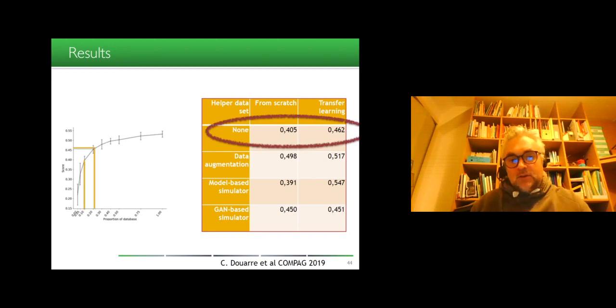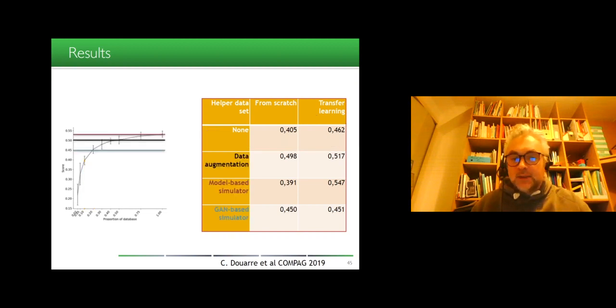So first, we see that transfer learning by training on ImageNet, of course, help already a bit and constitutes a gain of 10% of annotation. And then, if we move to data augmentation, model-based simulator, or the GAN-based simulator, we see that the best performance are obtained with the model-based simulator, which managed without having to produce any more manual annotation to gain the performance that we would have had if we would have annotated 100% of the data set. So we have saved here, in this case, 90% of annotation time.